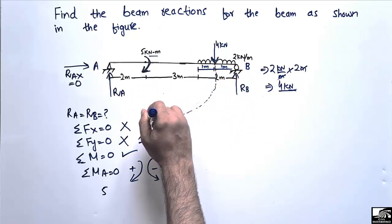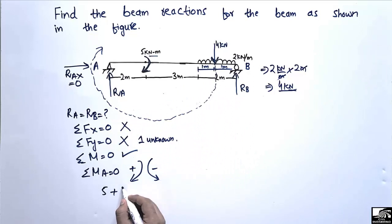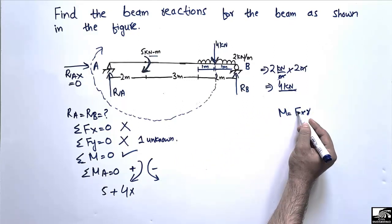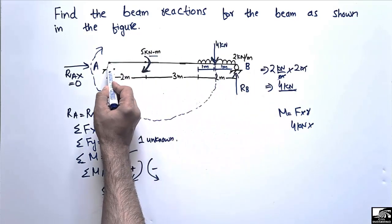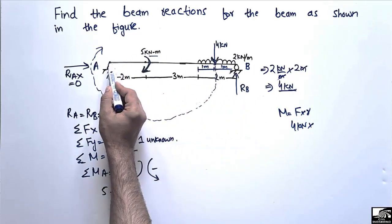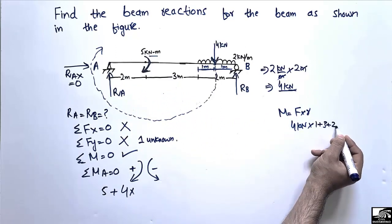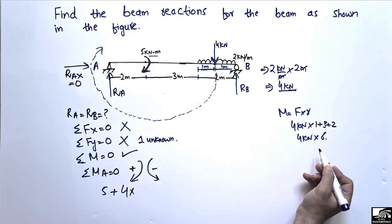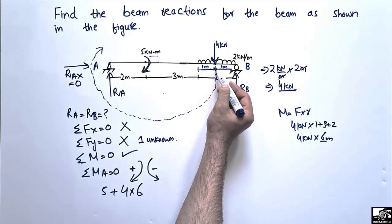For the 4 kN load, moment equals force times moment arm. The moment arm is the distance from the load to point A: 1 m (center of UDL region) plus 3 m plus 2 m, giving a total moment arm of 6 meters. So the moment contribution is +4 × 6 = +24 kNm.